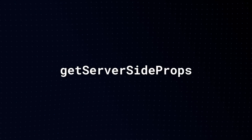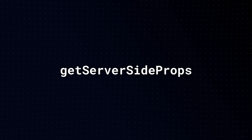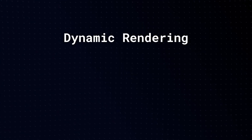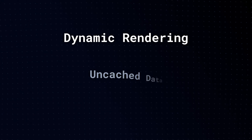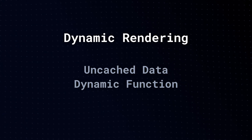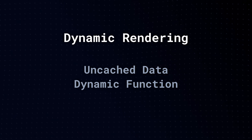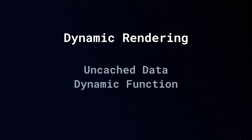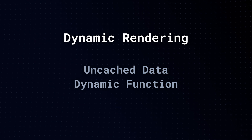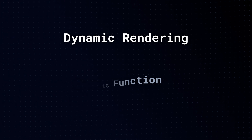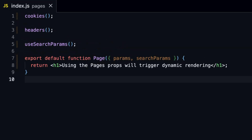In Next.js 12, to use server-side rendering we had to use getServerSideProps. In Next.js 13, we don't need to do that anymore. Next.js automatically detects when a route requires dynamic rendering. If Next.js detects uncached data or a dynamic function, it will automatically switch to dynamic rendering. Dynamic functions are functions that require information only known at request time — for example, cookies, headers, or URL search parameters. In fact, those are all the dynamic functions.